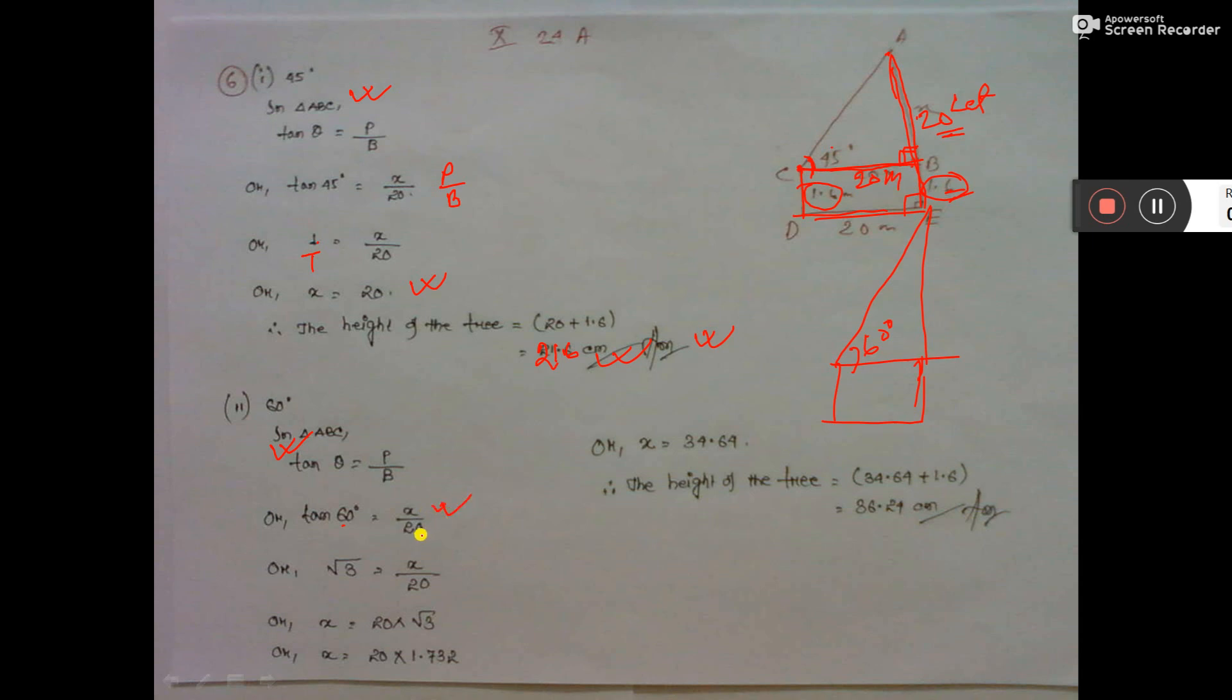Tan 60 equals perpendicular by base. Tan 60 value is root 3. Do the calculation: X equals 20 times root 3. It comes to 34.64.